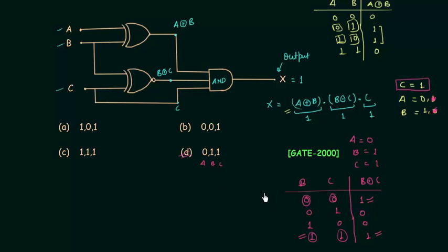There is no need to make the two truth tables in the exam; I made them only to explain. You can easily solve this problem by using the properties of XOR and XNOR gates. That is all for this lecture; see you in the next one.